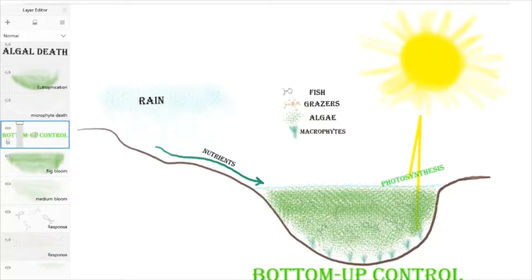Think with me. What happens with a plant when the plant doesn't receive enough sunshine for a long period of time? It dies. The macrophytes will start to die in the bottom of the lake because they don't receive light. And if the macrophytes start to die, they cannot compete with algae for nutrients anymore. And that means that the algae have much more nutrients now to grow.